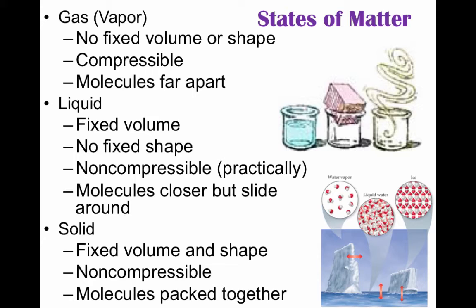Looking at the particle diagrams for water — we have ice, we have liquid, and we have gas. In a liquid, you have a fixed volume; you cannot change the volume of the liquid. However, there's no fixed shape, so you can pour it from a graduated cylinder into a beaker and it will take the shape of the container. It is non-compressible, and the molecules are closer together but slide past each other. A solid has a fixed volume and shape, you cannot compress it, and the molecules are packed very close together. You need to be able to recognize these at the particle level.